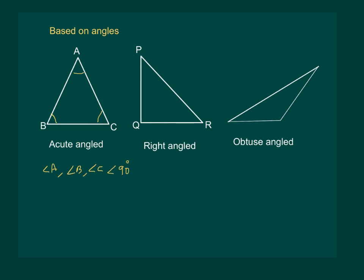But in a right-angled triangle, one of the angles has to be equal to 90 degrees. That means, angle Q is equal to 90 degrees in the given figure.